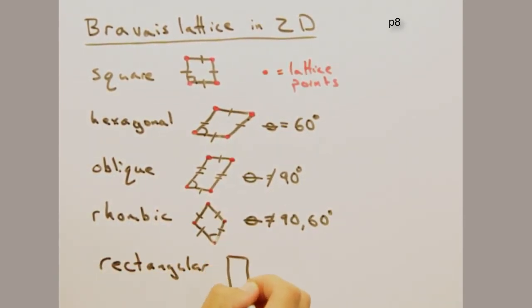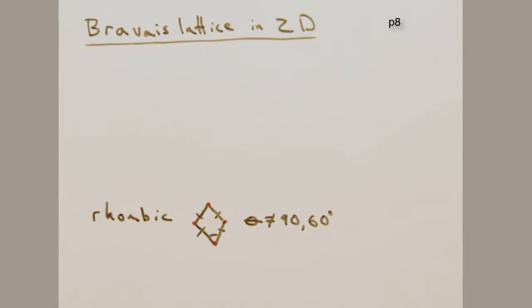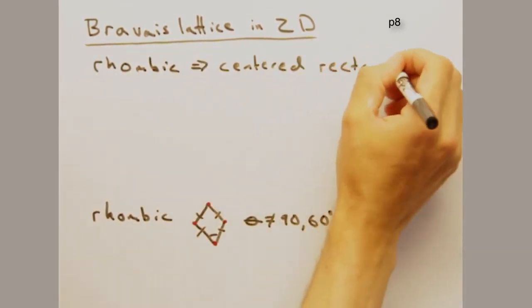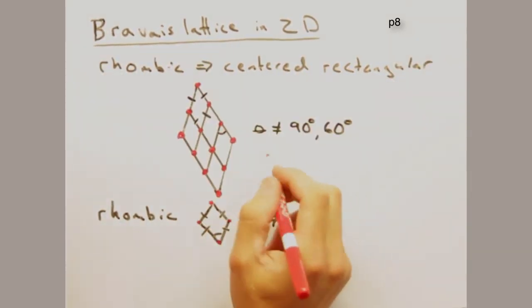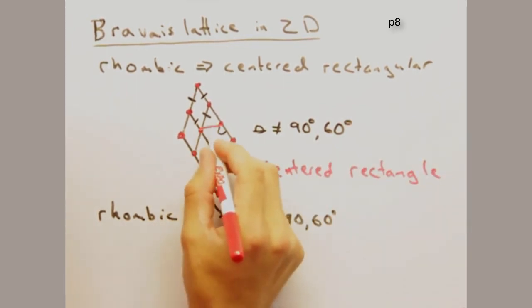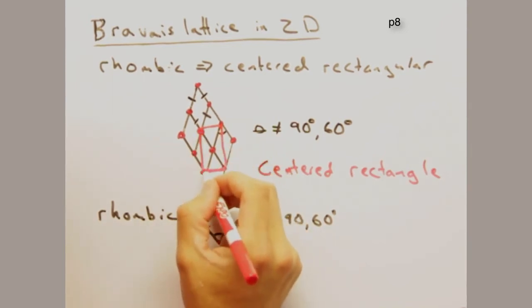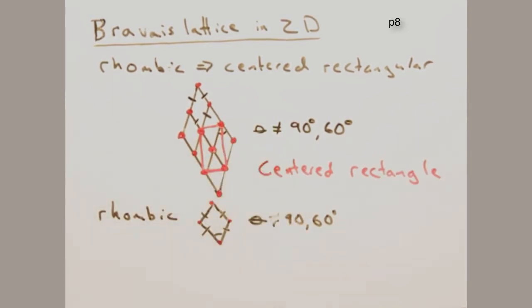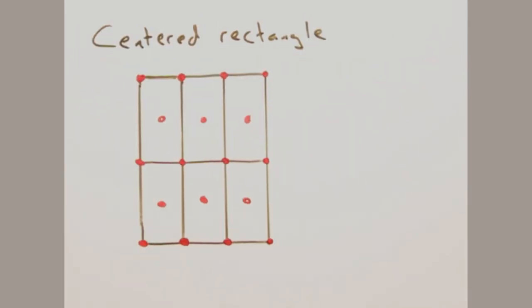While the primitive cell is fairly simple, sometimes we need something to better describe the full symmetry of the crystal. Exactly, and we achieve this through centering. Take the rhombic cell as an example. While this primitive cell works to span real space, we often use the centered rectangular cell, named so for the lattice point at the center of the cell. While this is not the primitive cell, the 90-degree corners makes the 180-degree rotational symmetry of the lattice more obvious. So this would be an example of a conventional cell. Not only does it better reflect the symmetry, but frankly rectangles are easier to work with as well.